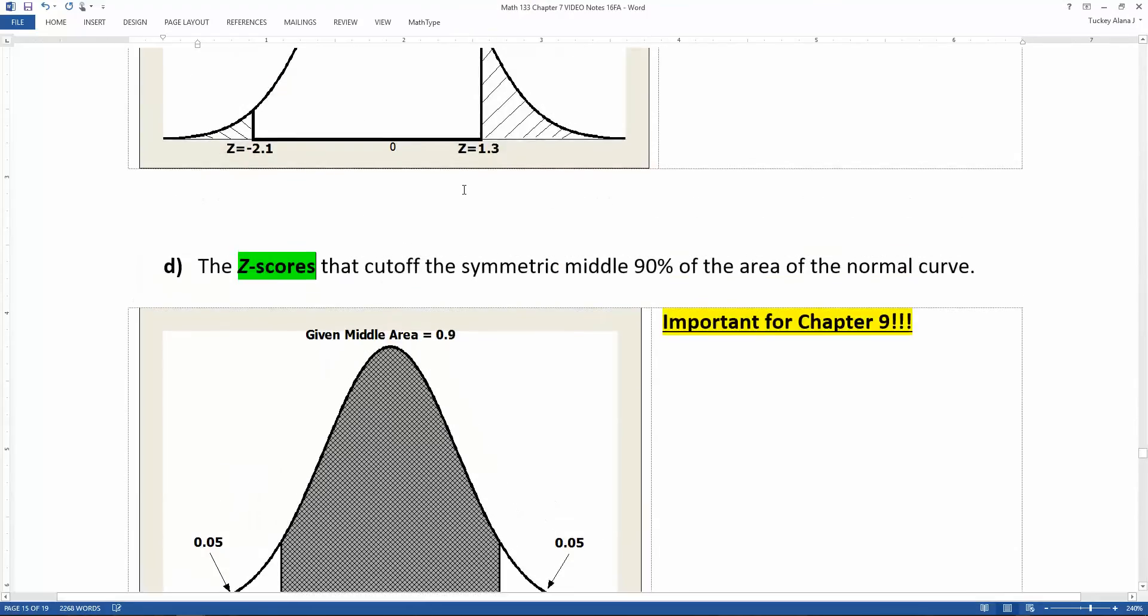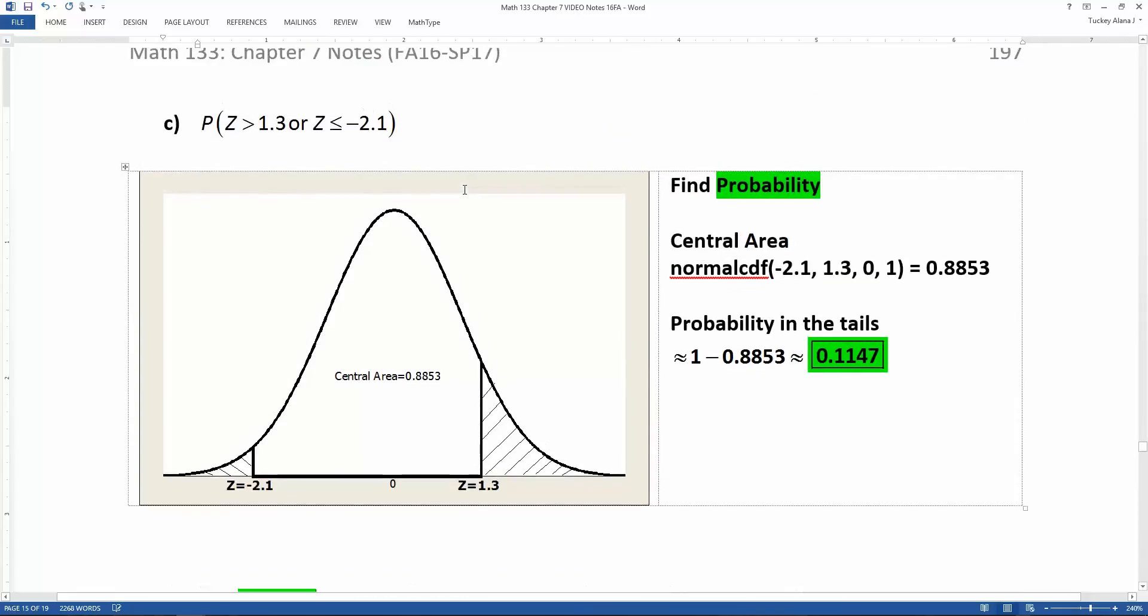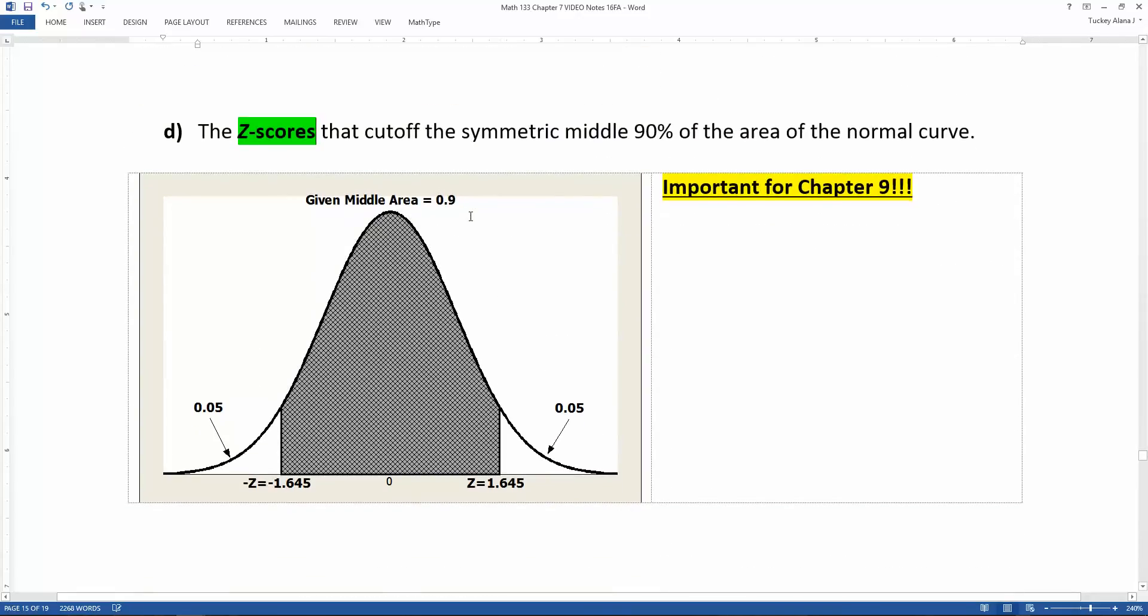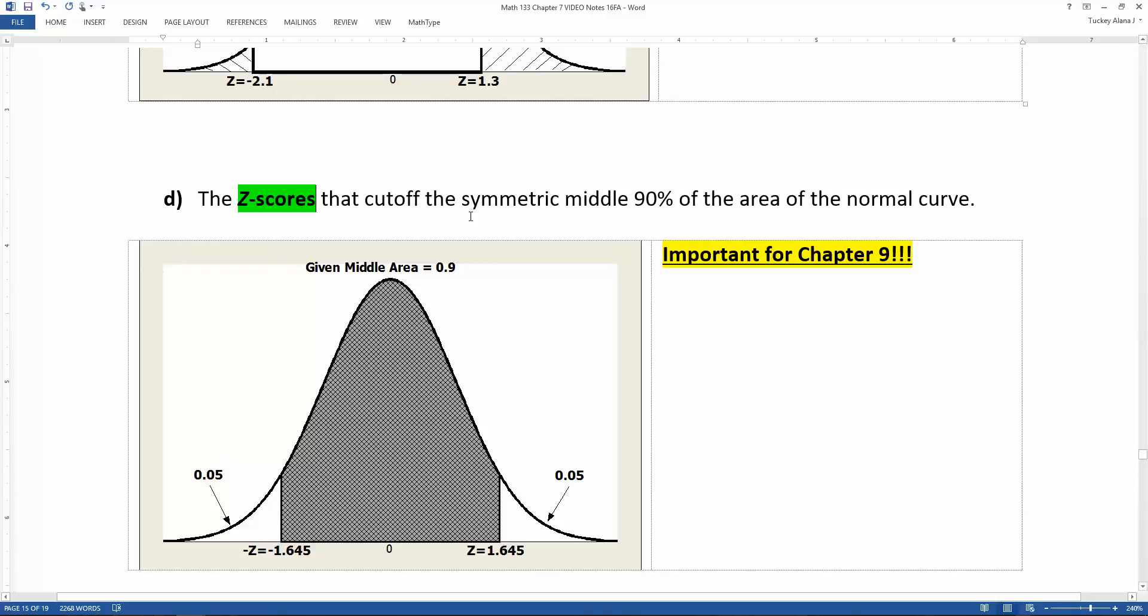Last but not least, we have a very important calculation for chapter 9. And this should look familiar. It's the middle, the z-scores that cut off the middle 90%, the symmetric middle 90%. Super important for chapter 9. You're going to need to be able to do this calculation later. So I've already labeled a whole bunch of stuff. In the central, we have this 90% in here, and that's 0.90. That means that together, the two tails are the complement of that, which is one takeaway 0.9, which is 0.10 or 10%.